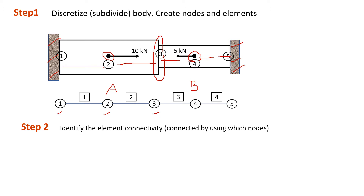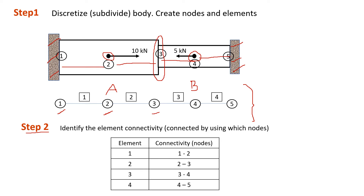Step 2 is to identify the element connectivity — meaning which element is connected by which nodes. From the figure you already know that element 1 is connected by node 1 and node 2. Step 2 is optional for bar problems because the nodes are continuous from one to another. However, when you solve for trusses the nodes will be scattered, so it becomes very important to identify connectivity carefully. An example is provided in the table.